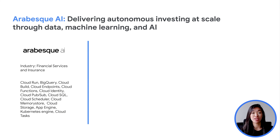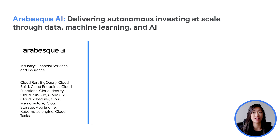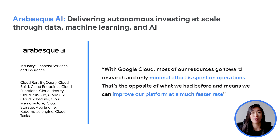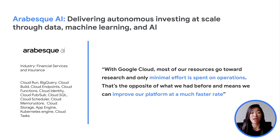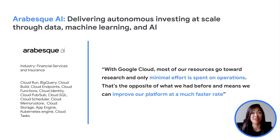Bringing it back to how our customers are using Cloud Tasks and Cloud Scheduler today: previously in video 3 of our build series, we covered how Best AI uses Cloud Run to reduce their server costs. Additionally, they were also able to use Cloud Tasks and Cloud Scheduler for orchestration of their workflow, and only minimal effort is spent on operations, helping them to reduce cost and latency as well as improve productivity.